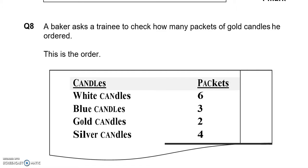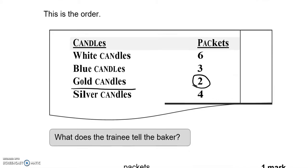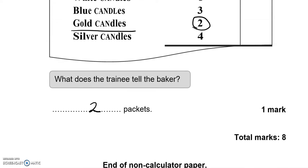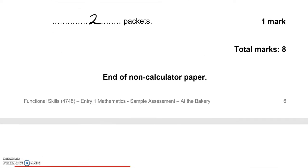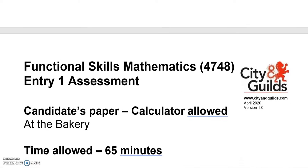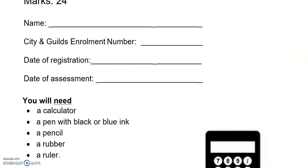The baker asked the trainee to check how many packets of gold candles he ordered. This is the order: gold candles, two of them. What does the trainee tell the baker? Two packets. This is the end of the first part. Now for the second part you can use a calculator.